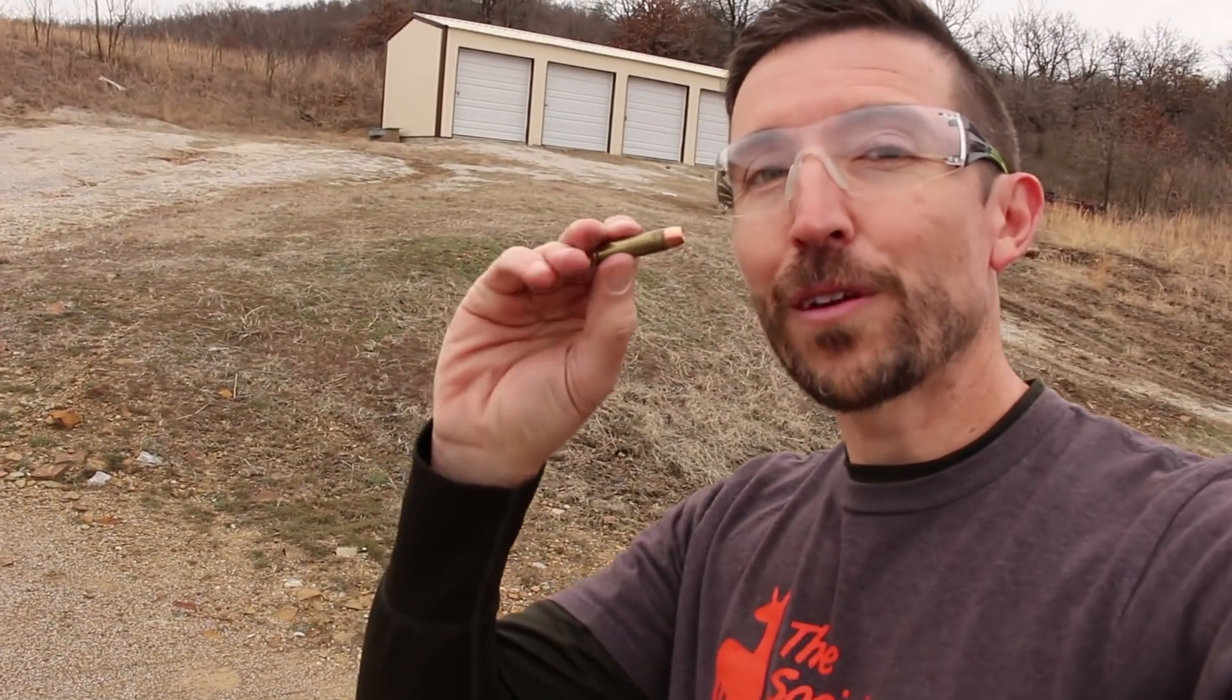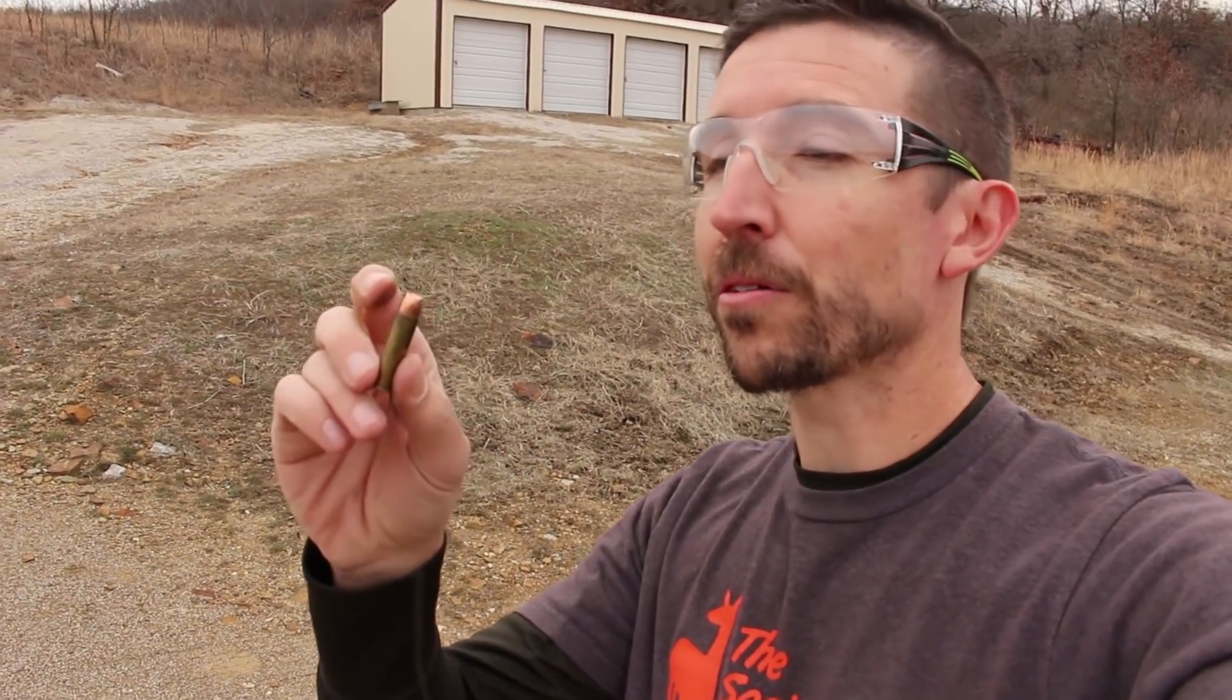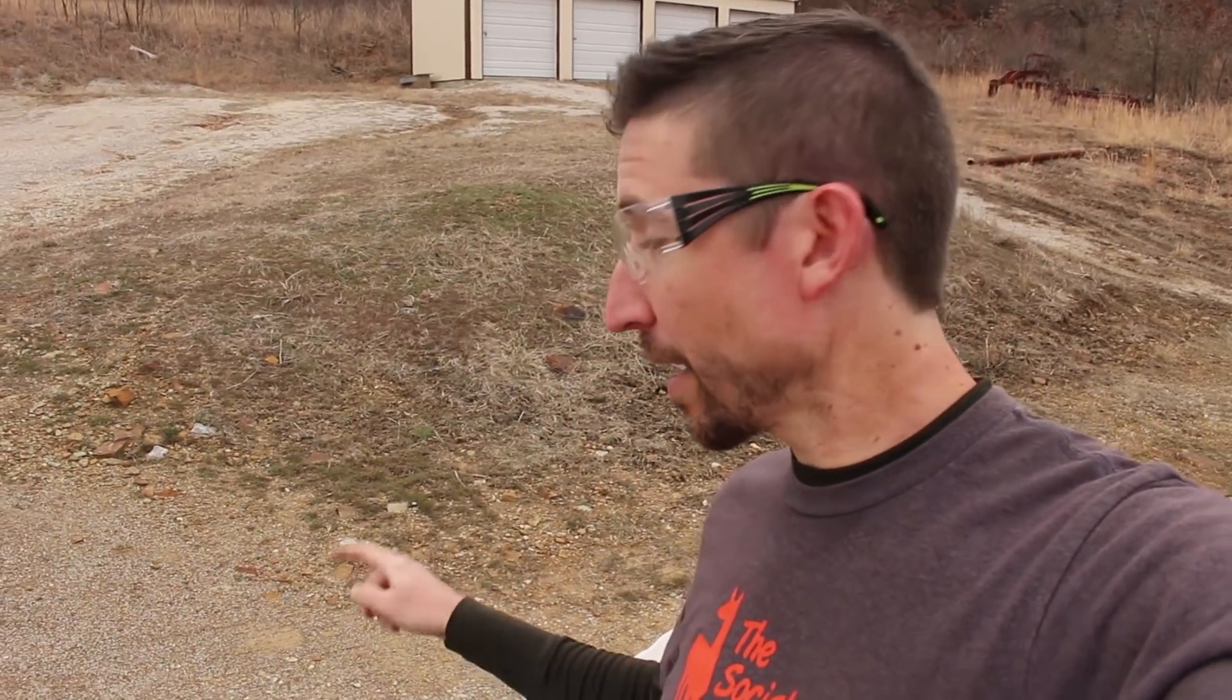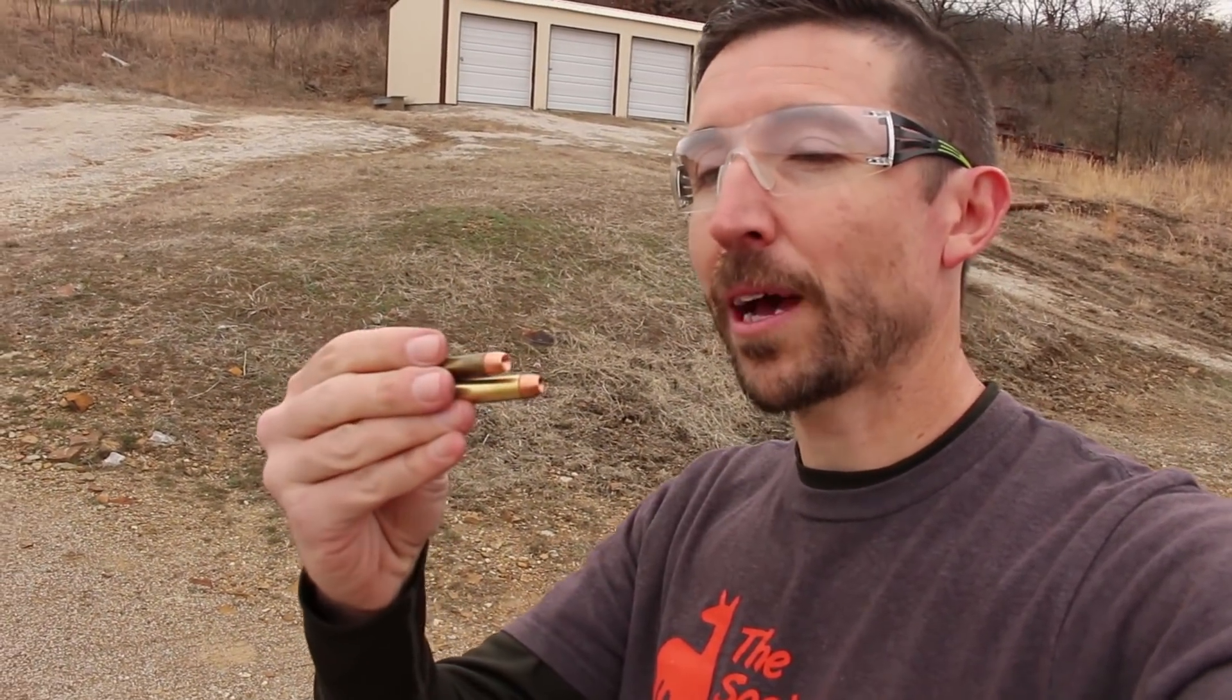Here is 357 Magnum. Today we're going to be running the exact same bullets and the exact same powder. We're doing the Spear Deep Curl 158 grain bullet. It's a huge hollow point and I expect that at no matter what speed it hits this, it's going to make quite a mess. We're going to be using this same bullet in 350 Legend as well, and we're using Hodgden H110 powder.